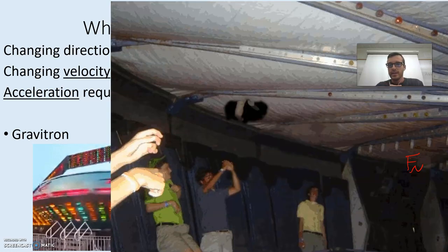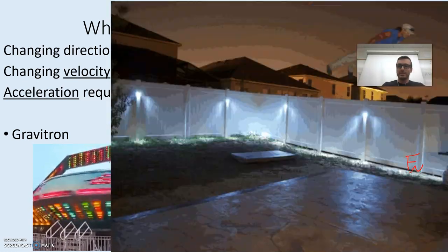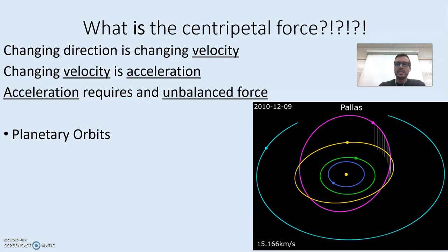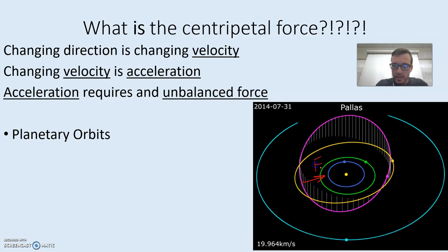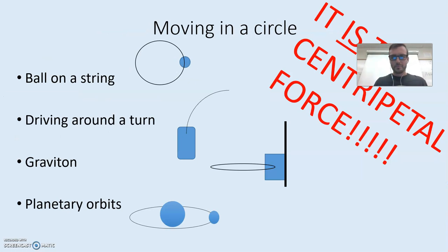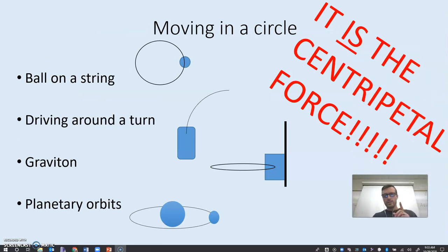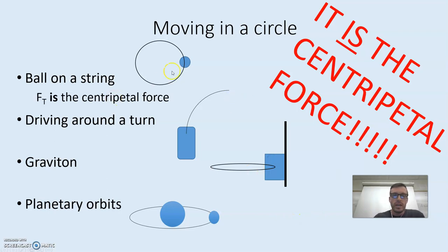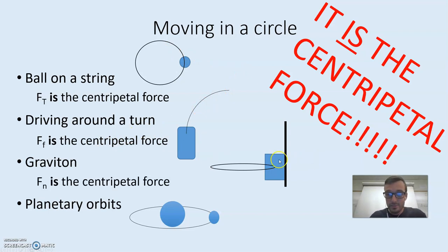If there wasn't a centripetal force, you'd fly off the side and go tangent because of tangential velocity. So these are our four scenarios: FT — tension — is the centripetal force for a ball on a string. FF — friction — is the centripetal force for a car going around a turn. FN — normal force — is the centripetal force for the Gravitron. And FG — gravity — is the centripetal force for gravitation. We see that different kinds of forces can act as the centripetal force.